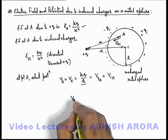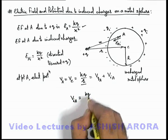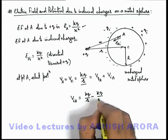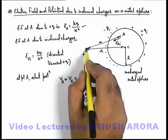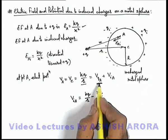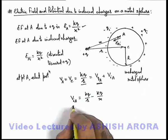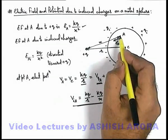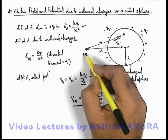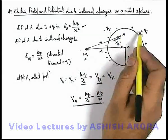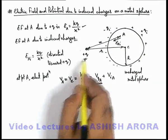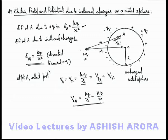Now at point a the potential kq/r is contributed by both the external charge and the induced charges. So we write: potential due to q at a plus potential due to induced charges at a equals kq/r. The potential due to the external charge at point a is kq/x, so the potential due to induced charges at point a is kq/r minus kq/x. This is the result for potential at point a due to the induced charges. The electric field at a due to induced charges is kq/x². The same analysis you can use for various kinds of metal objects to relate electric field and potential due to induced charges and external field and potential at any point.